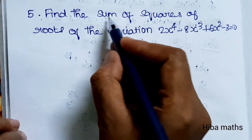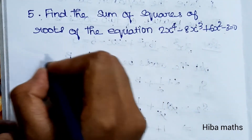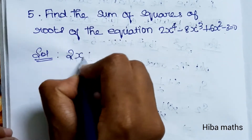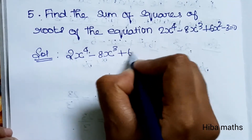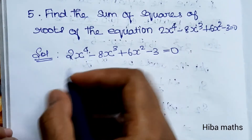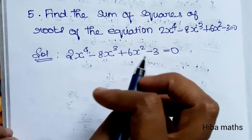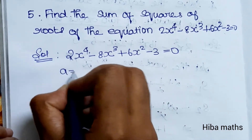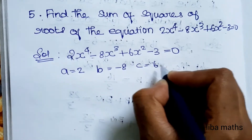We call our first question: sum of squares of roots. In the solution, we have the given equation 2x power 4 minus 8x cube plus 6x square minus 3 equal to 0. So we get the values: a equals 2, b equals minus 8, c equals 6.